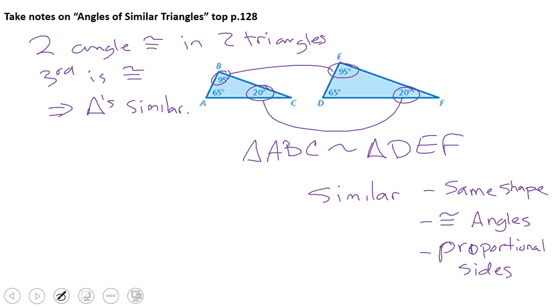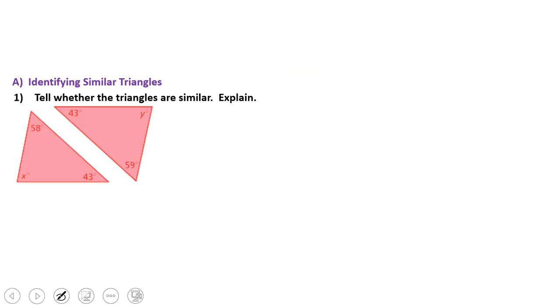So it's the same shape, all the angles are congruent, and the sides are proportional. So right here, these two triangles, same shape, all three angles, all the angles are congruent, which means those side lengths are proportional. These triangles are similar. So we're going to use that.